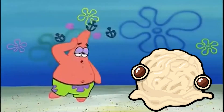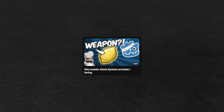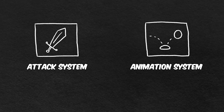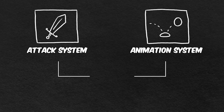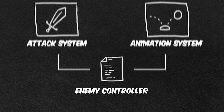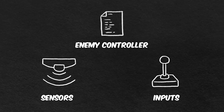Our enemies need to be able to attack — obviously. If you're a subscriber, you already know that we implemented an attack system as well as an animation system in our previous videos. Using these systems, we can code behaviors without taking care of movement or animations, because this part is already handled. What is only missing is that instead of a player controller, we set up an enemy controller that has a bunch of sensors and inputs that we can control and use from external scripts.